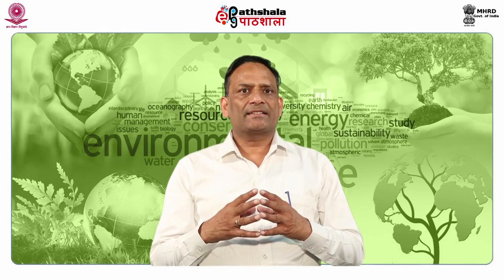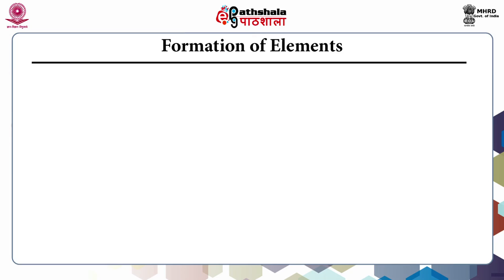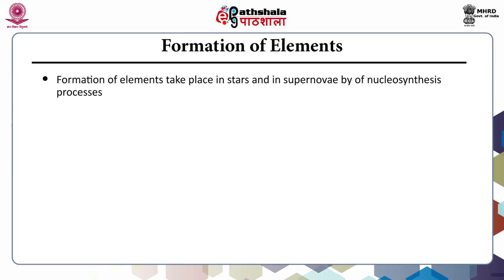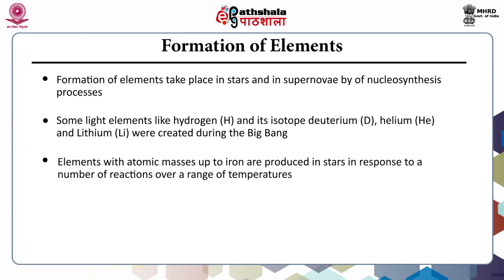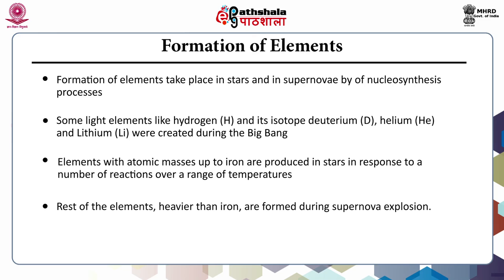The question arises: how does formation of elements take place? Formation of elements takes place in stars and in supernovae by nucleosynthesis processes. Some light elements like hydrogen and its isotopes deuterium, helium, and lithium were created during the Big Bang. Elements with atomic masses up to iron are produced in stars in response to a number of reactions over a range of temperatures. The rest of the elements heavier than iron are formed during supernova explosions.